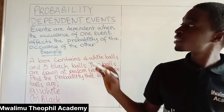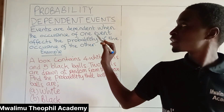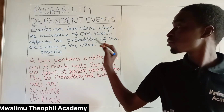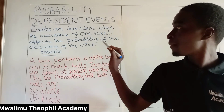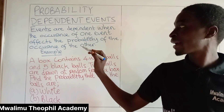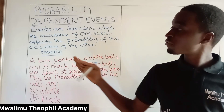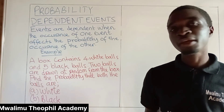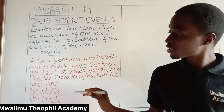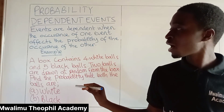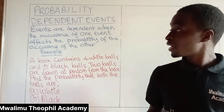We say that events are dependent when the occurrence of one event affects the probability of the occurrence of the other. Now, we have one example here which deals with the probability for dependent events.